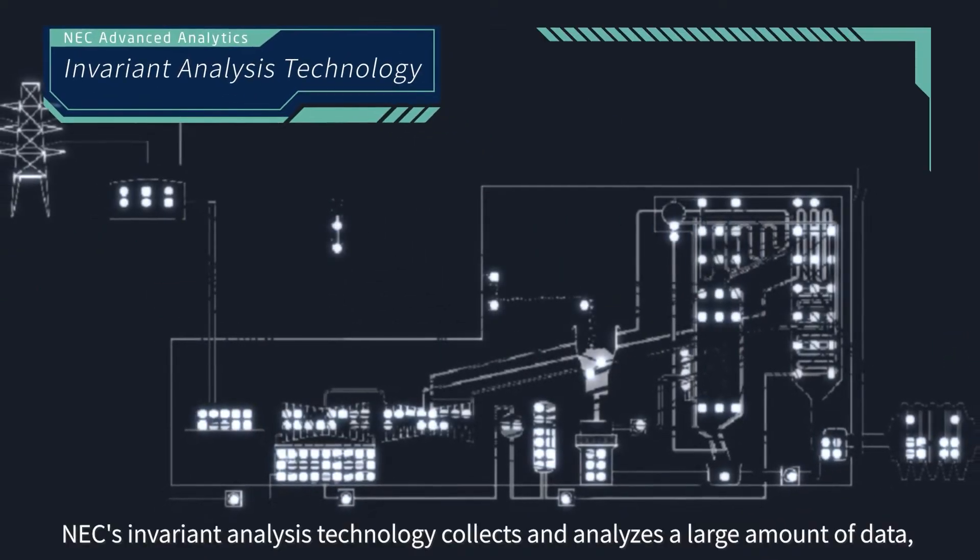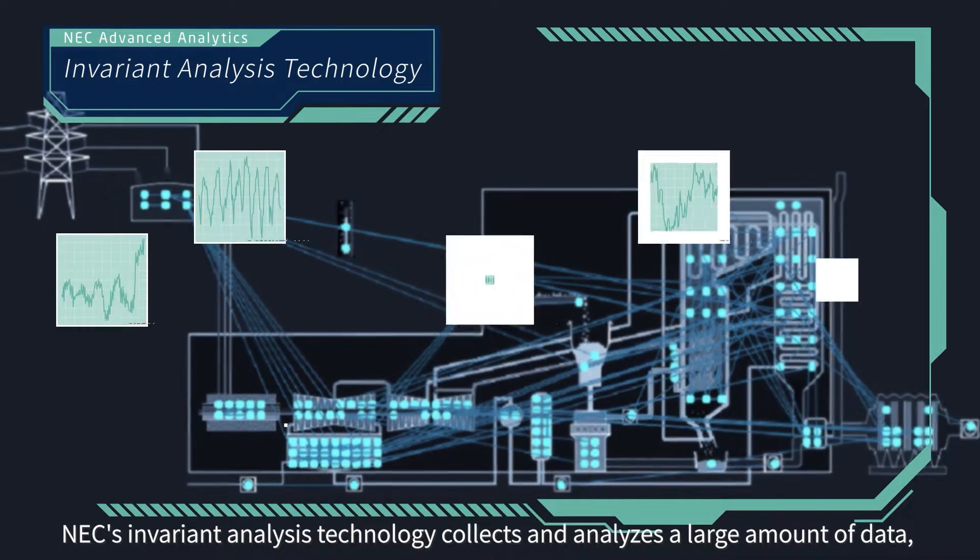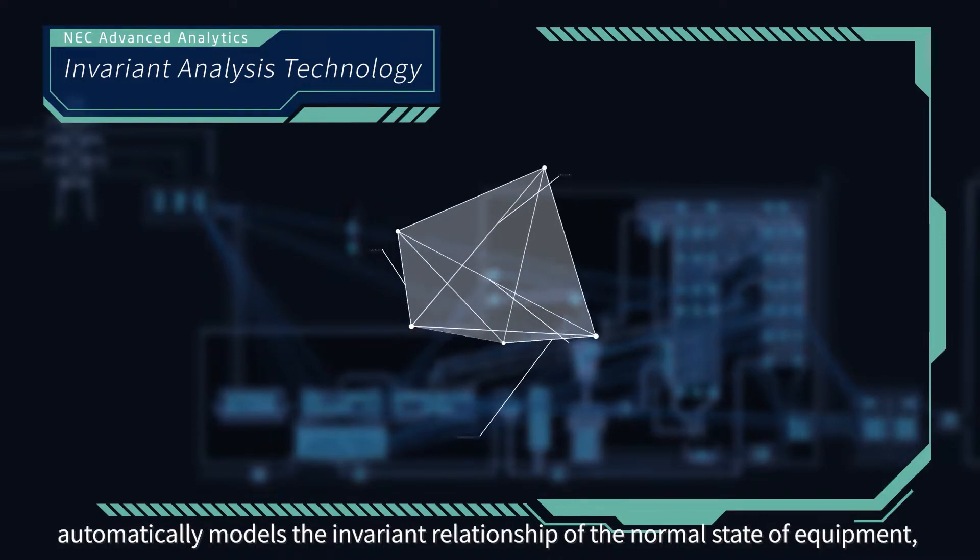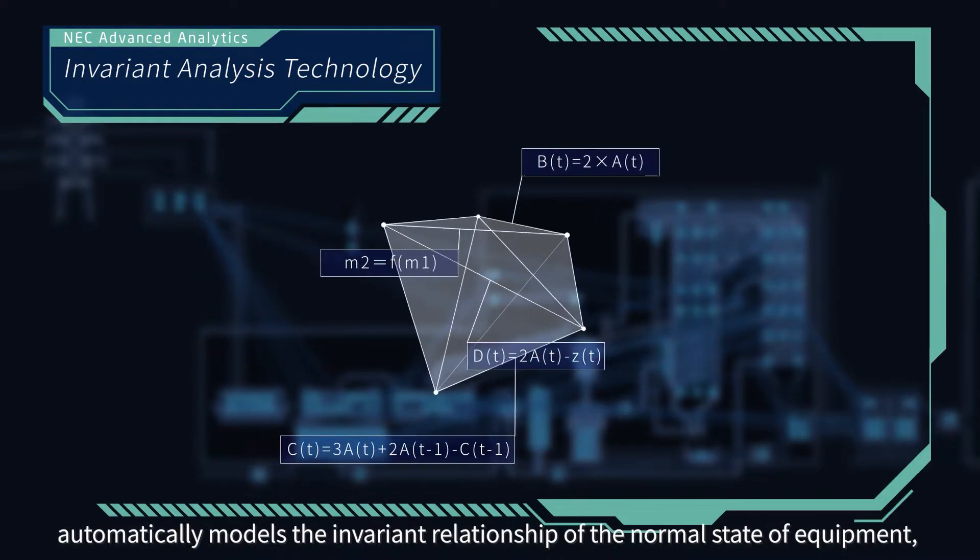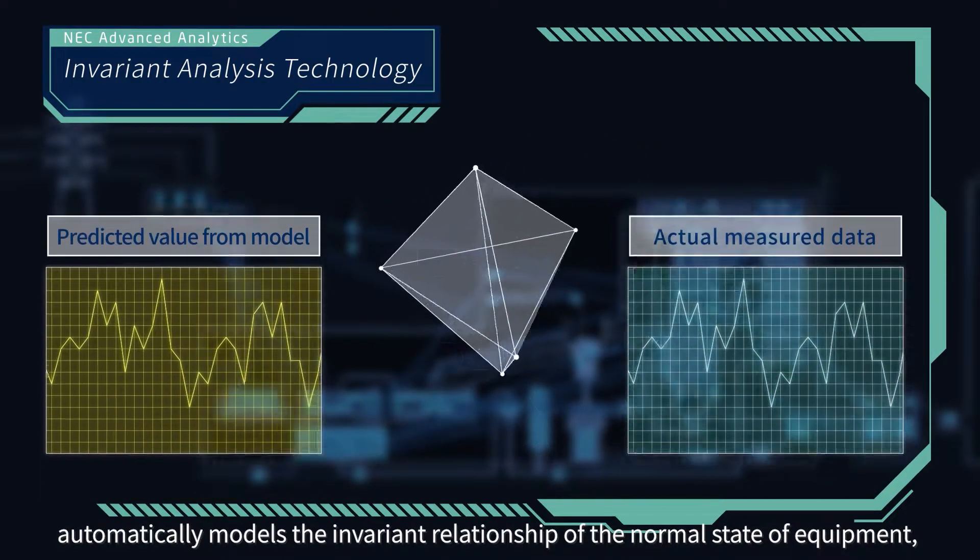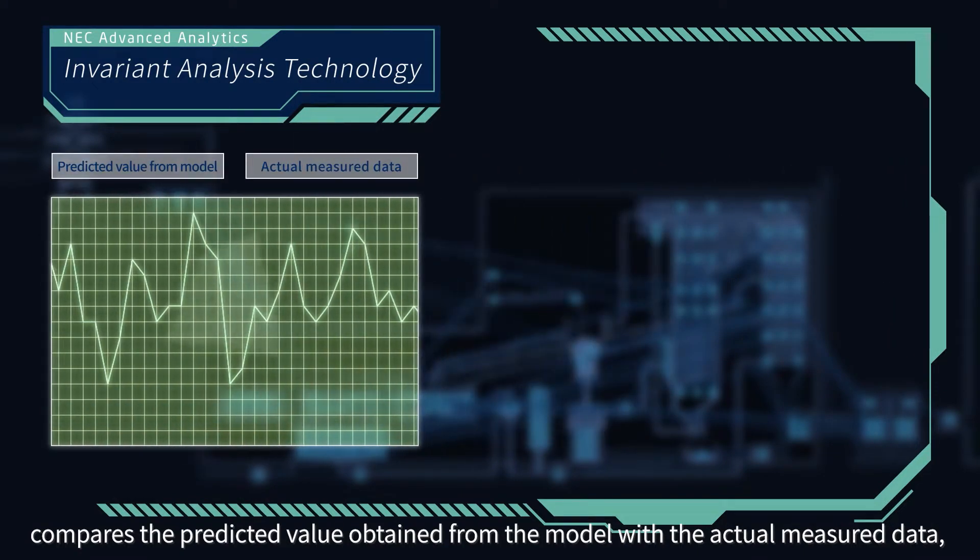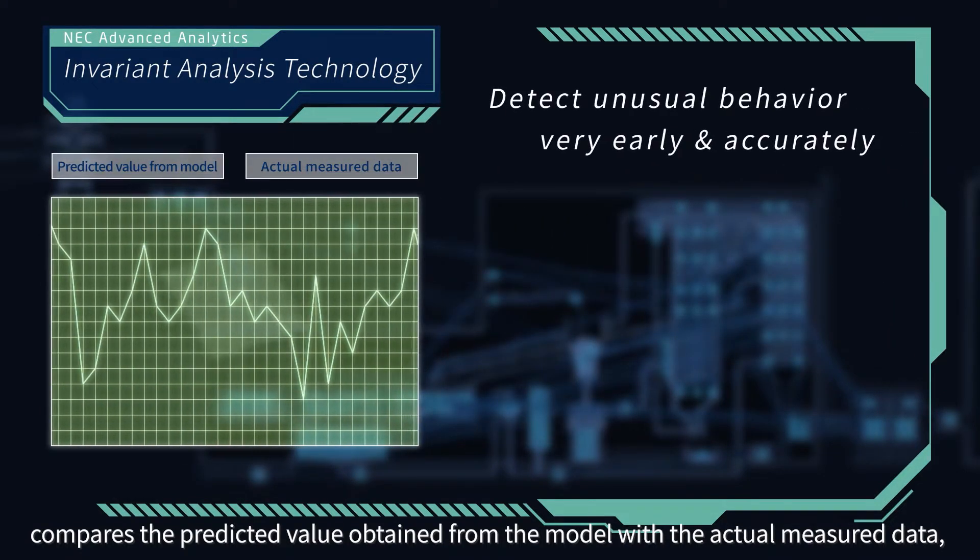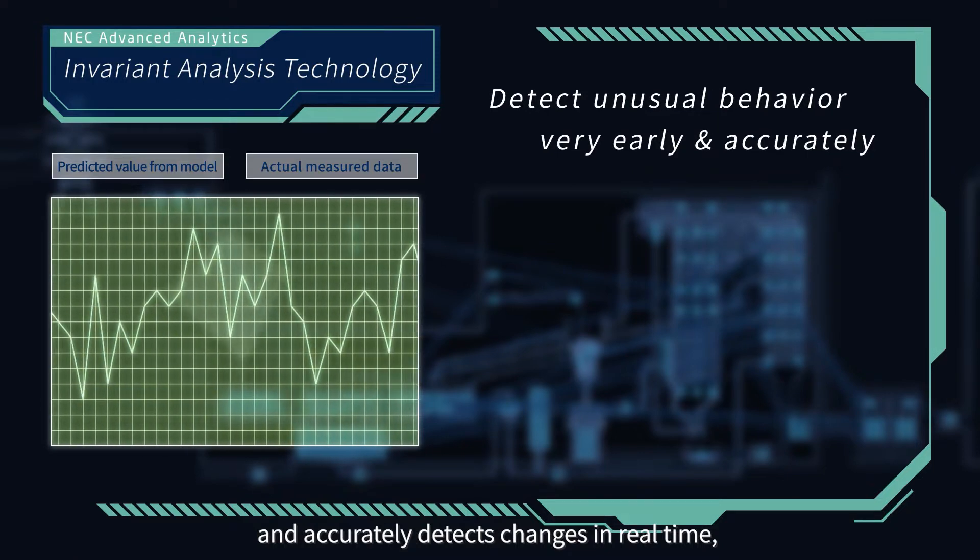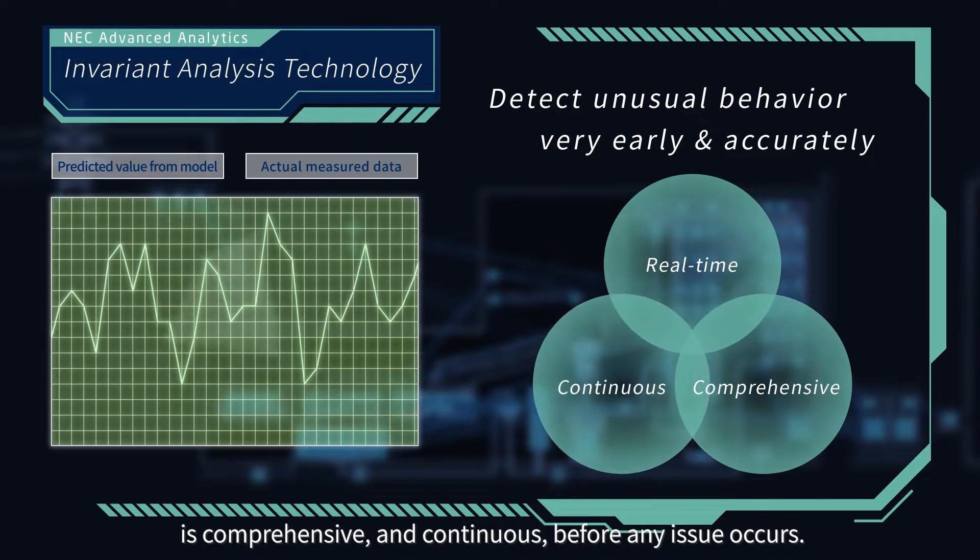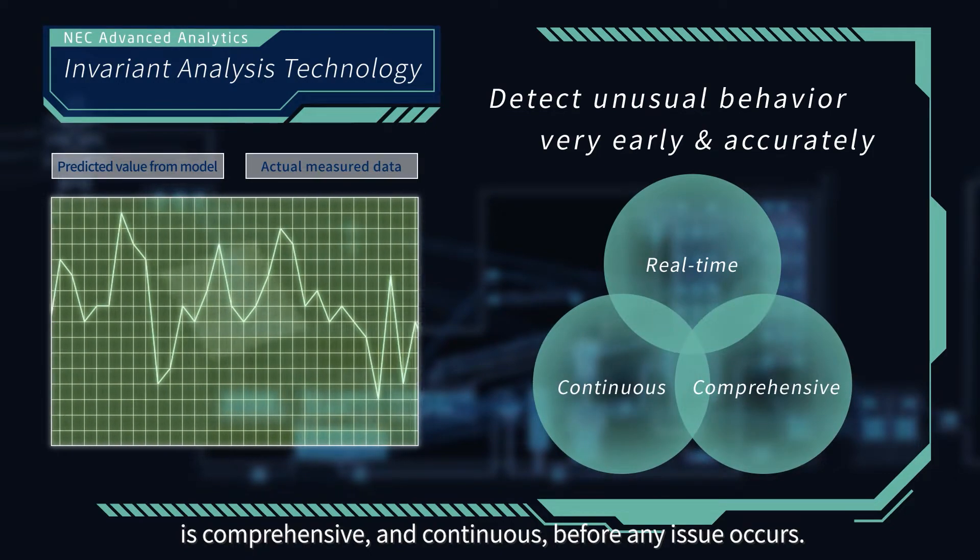NEC's invariant analysis technology collects and analyzes a large amount of data, automatically models the invariant relationship of the normal state of equipment, compares the predicted value obtained from the model with the actual measured data, and accurately detects changes in real time, comprehensively and continuously before any issue occurs.